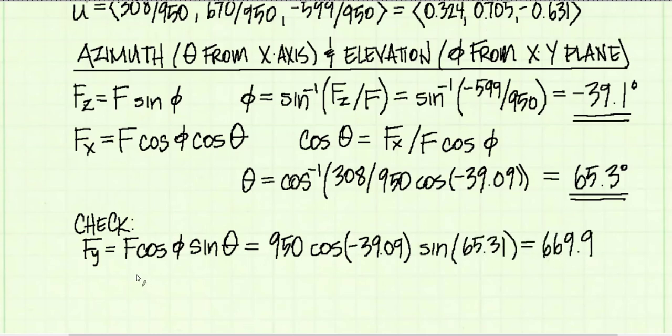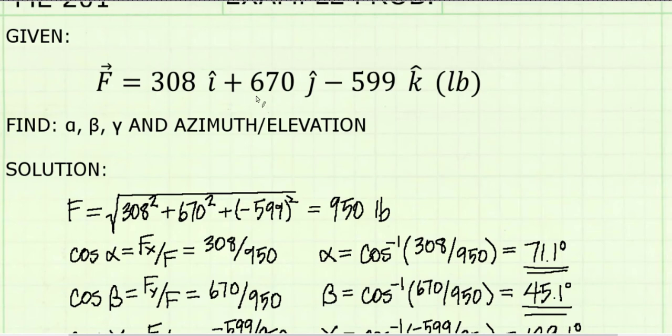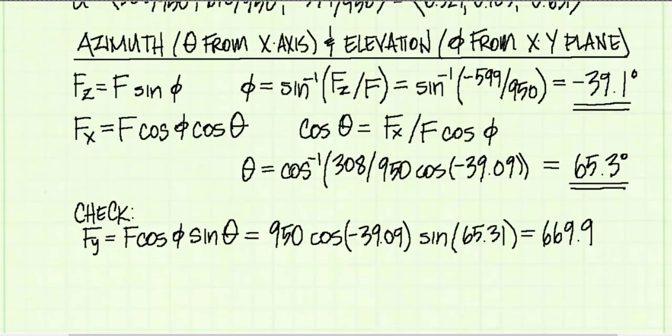Here was our last equation for solving for the y component. Plugging in values for phi and theta, I get 669.9. If we look at our y component, it's given as 670, which is the same answer to three significant digits. So, that's encouraging. That means my answers are probably right. And we're done.